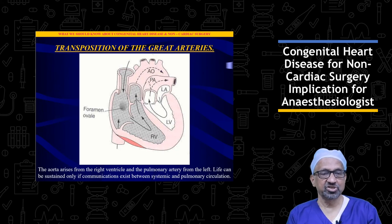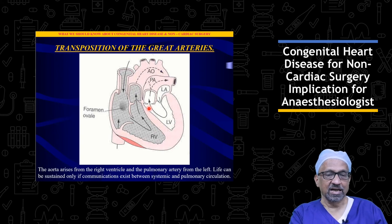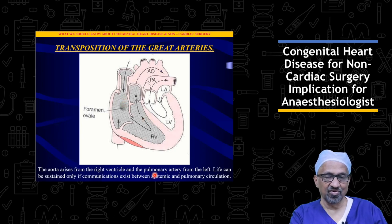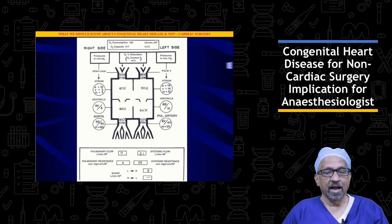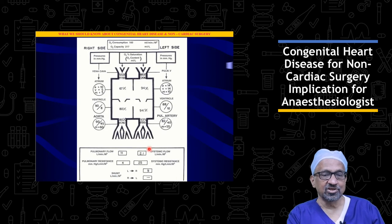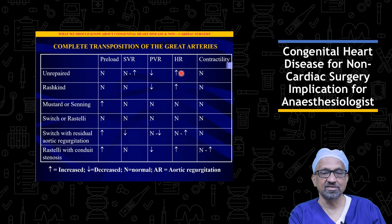The next disease condition is transposition of great arteries, where the right ventricle gives rise to the aorta and the left ventricle gives rise to the pulmonary artery. A shunt lesion — in the form of ASD, VSD, or PDA — is necessary for survival. The systemic and pulmonary circulations are in parallel rather than in series. There is systemic desaturation. The cardiac management grid for unrepaired TGA: maintain preload, SVR maintained or slightly increased, pulmonary vascular resistance decreased, heart rate maintained slightly higher, and contractility maintained.